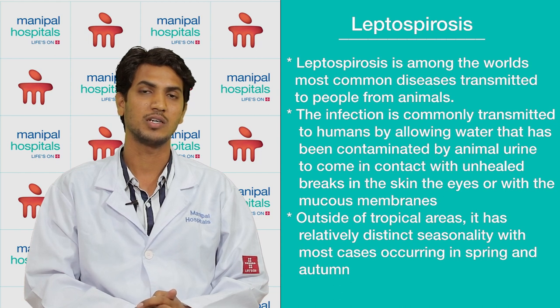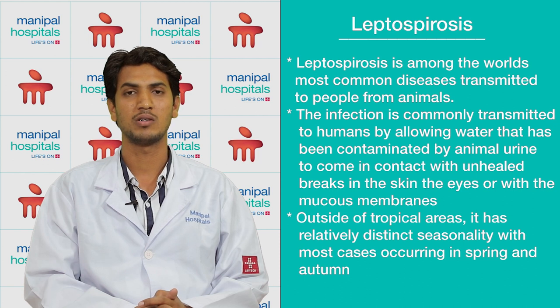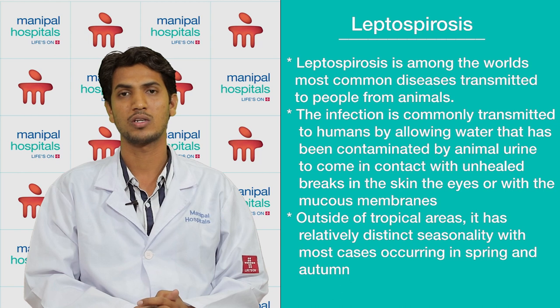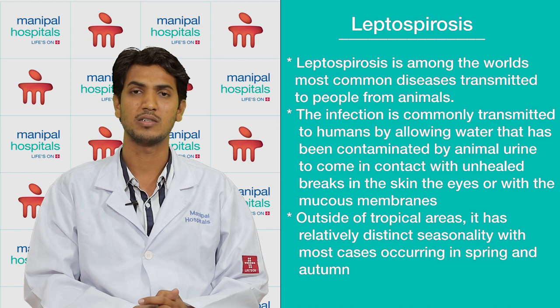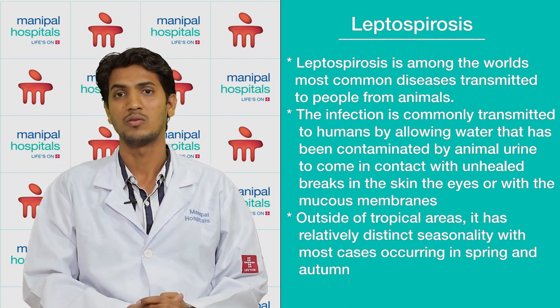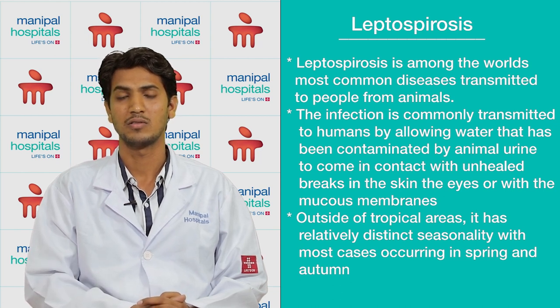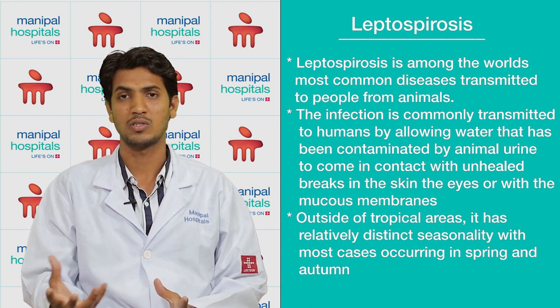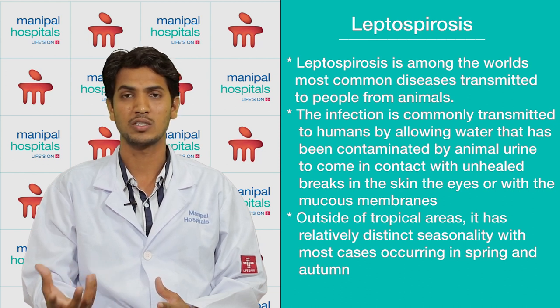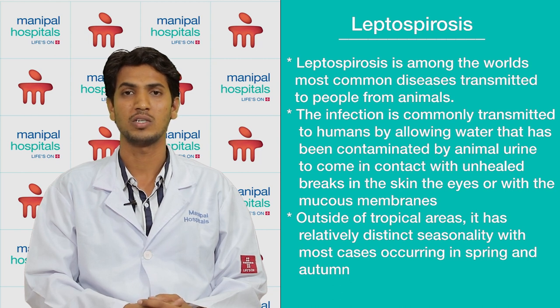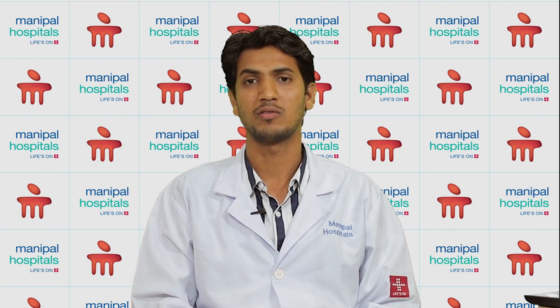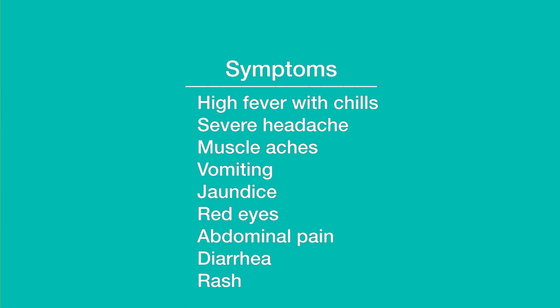Leptospirosis is also one of the common diseases during rainy seasons, more commonly seen in lower socioeconomic populations. It is a bacterial disease caused by the bacterium Leptospira, spread through water contaminated by animal feces such as from rats and mice. If a person with an open wound is exposed to this contaminated water, the bacteria enter the body. It can affect multiple organs, causing liver failure and renal failure. Mild disease presents with fever, chills, body pain, joint pains, and calf muscle pain; severe disease can cause jaundice, known as Weil's disease.